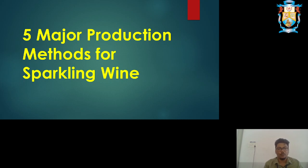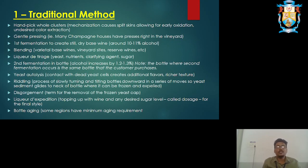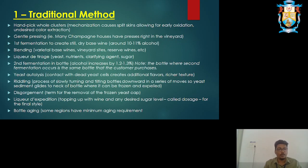Let's understand the five major production methods of sparkling wine. The first one is the traditional method, also known as the champagne method. High quality products are prepared through this traditional or champagne method. Hand-picked, better quality grapes are used here, along with mechanization. General pressing is given. Champagne houses and vineyards have a proper type of pressing unit. First fermentation happens in still wine at around 10 to 11 percent alcohol. Then it goes for the blending process.